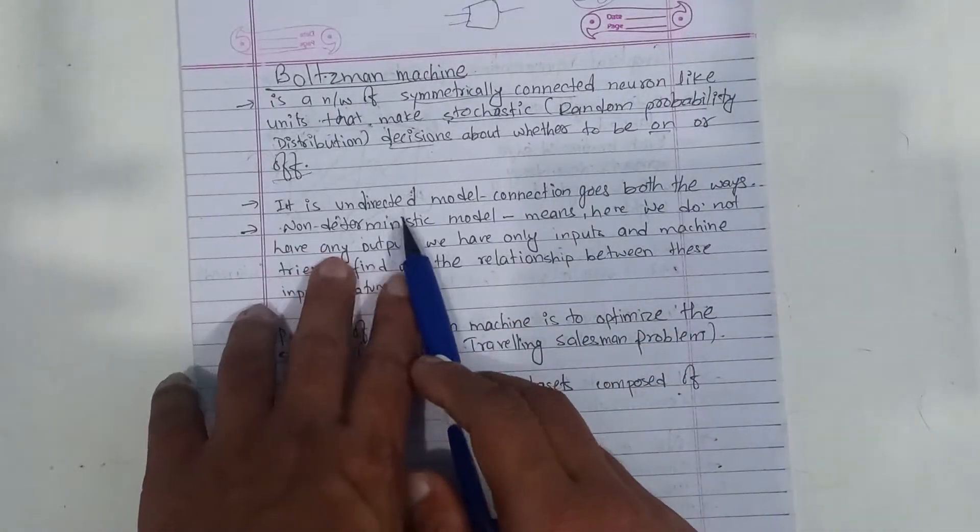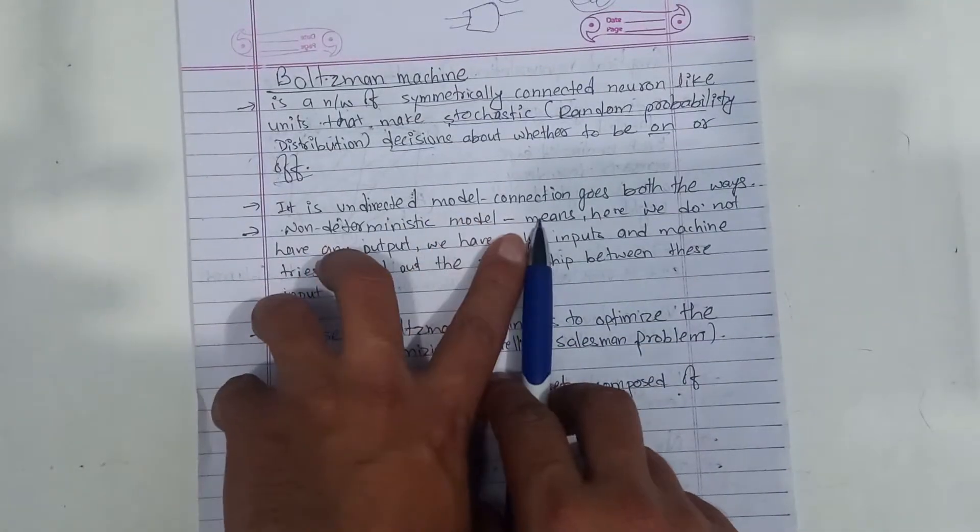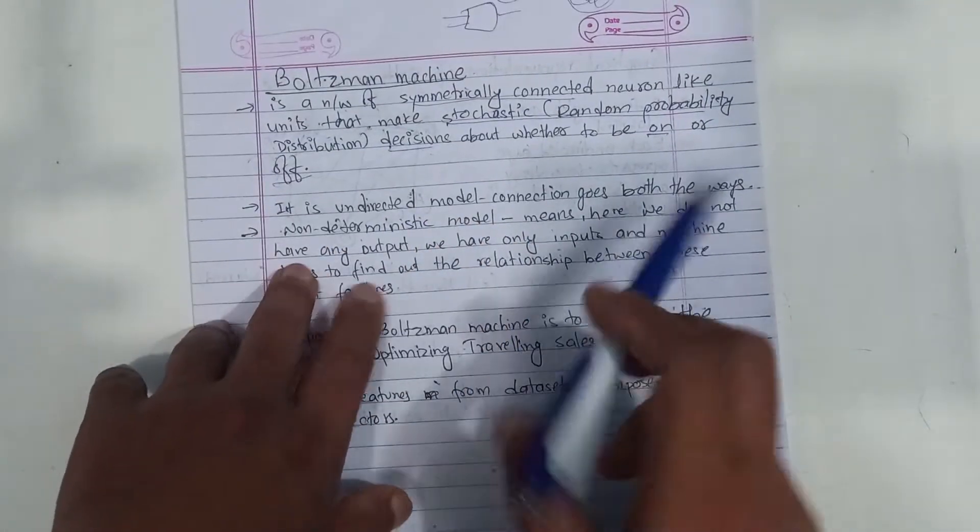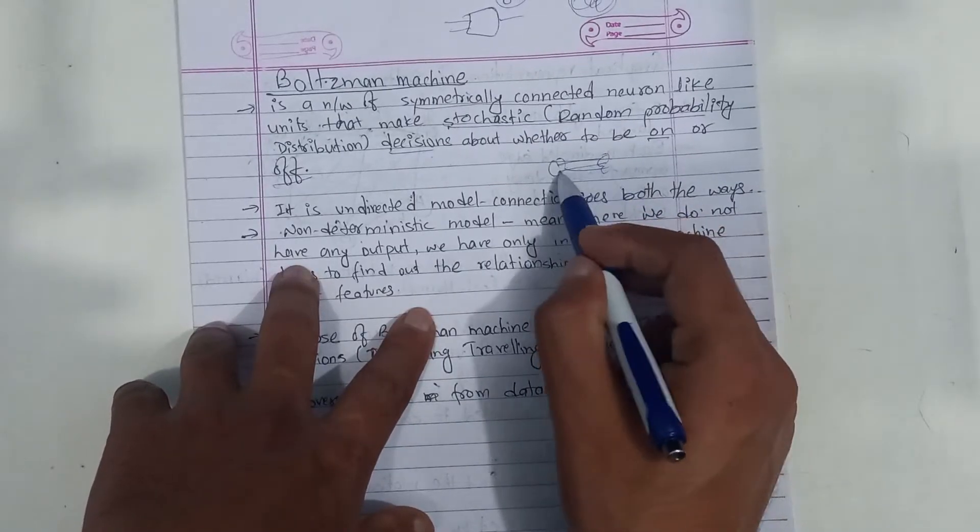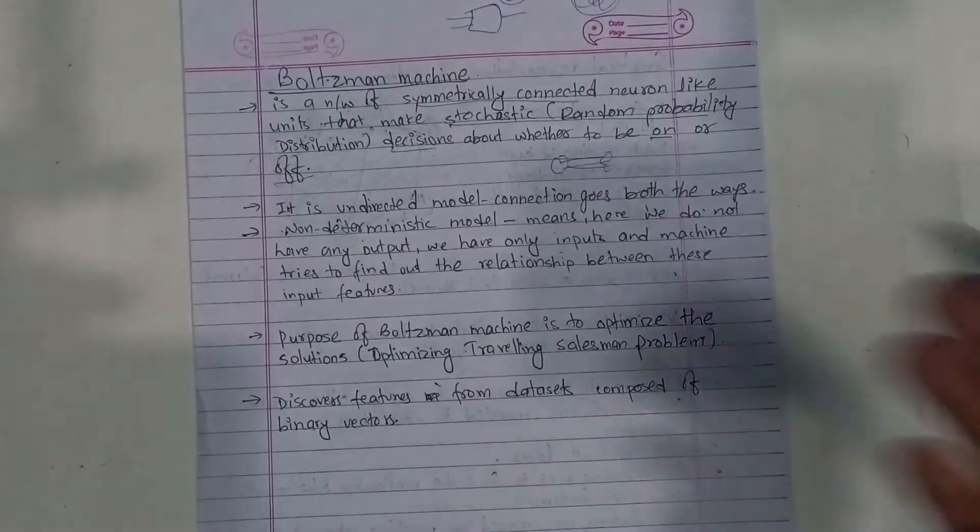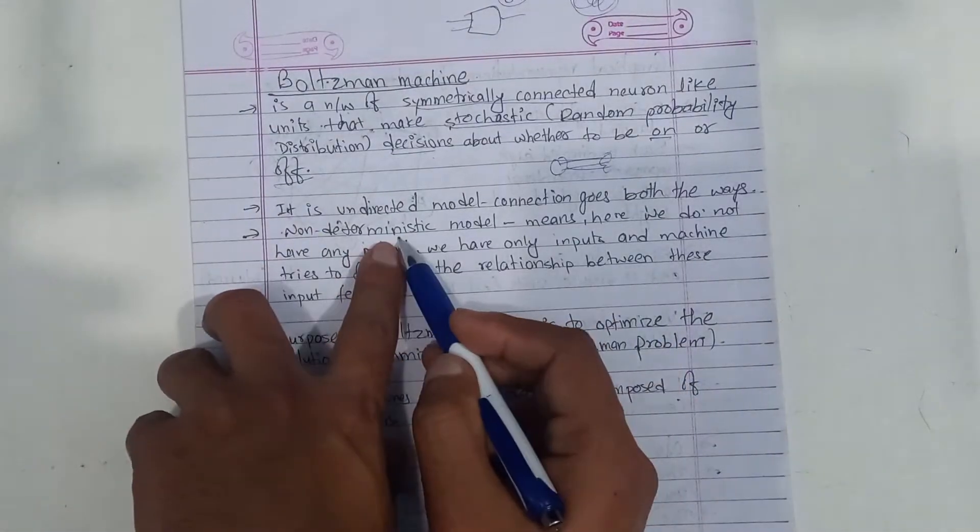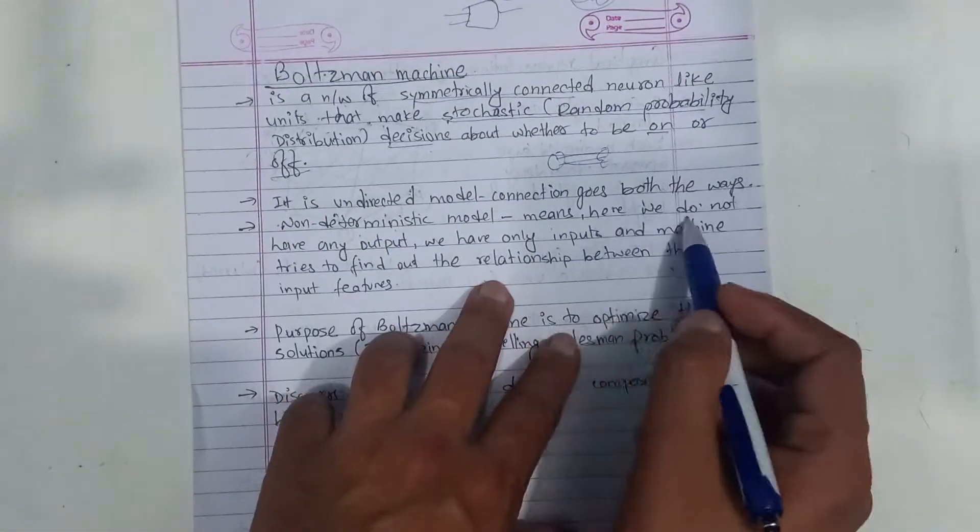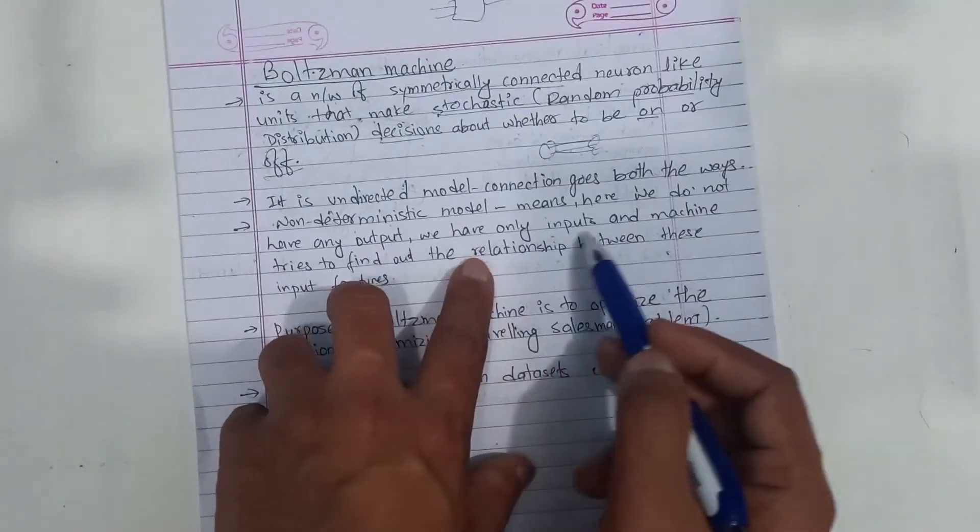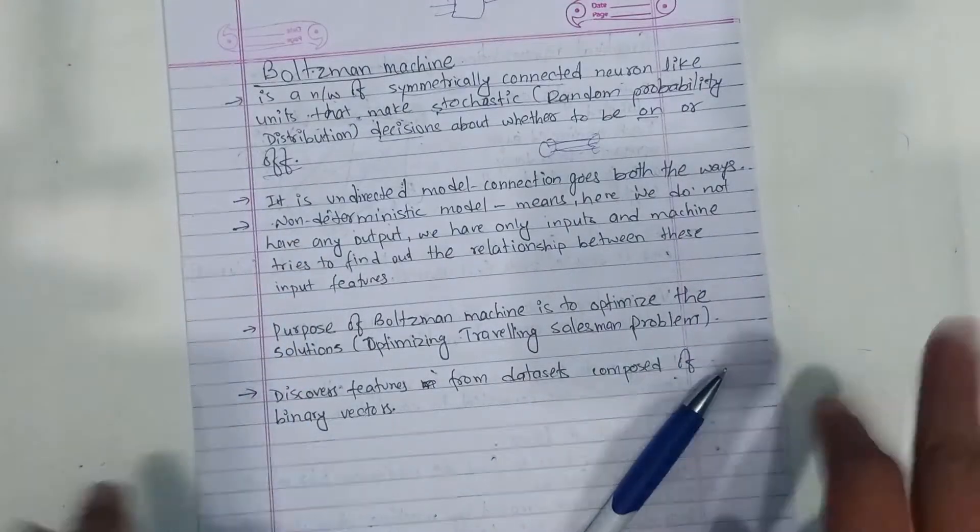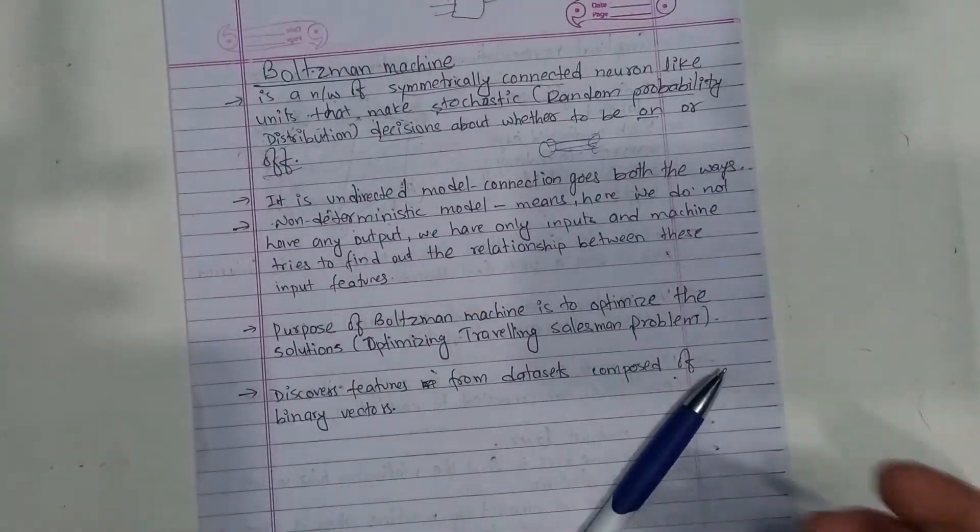It is an undirected model. Connection goes both ways. It is a non-deterministic model. Here we do not have any output.